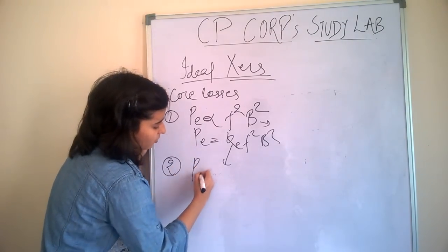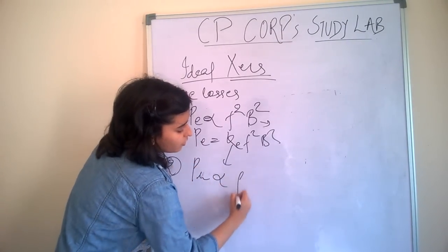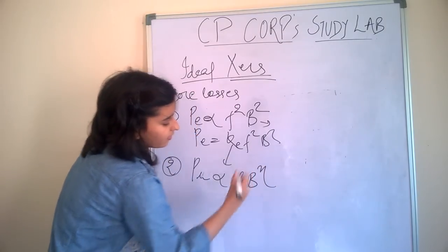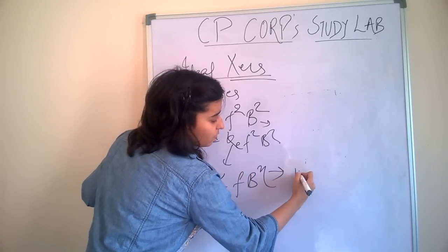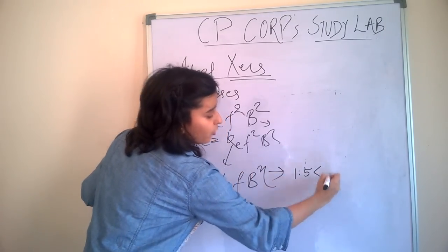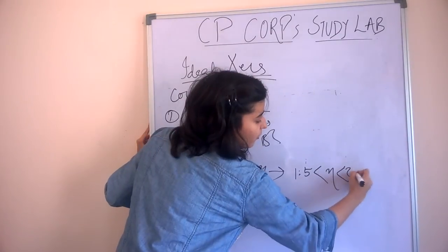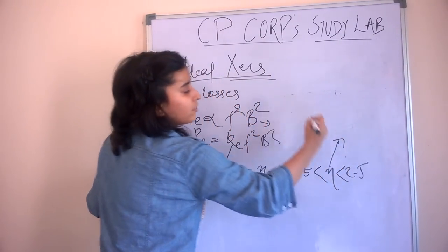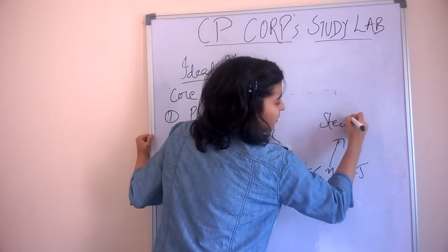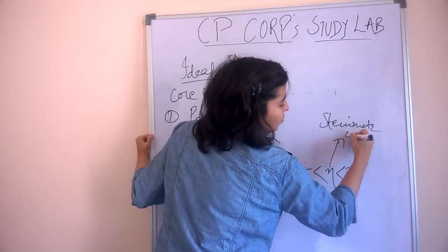Second, hysteresis loss. It is proportional to f*B^n, where n value varies from 1.5 to 2.5, and it is called a constant.